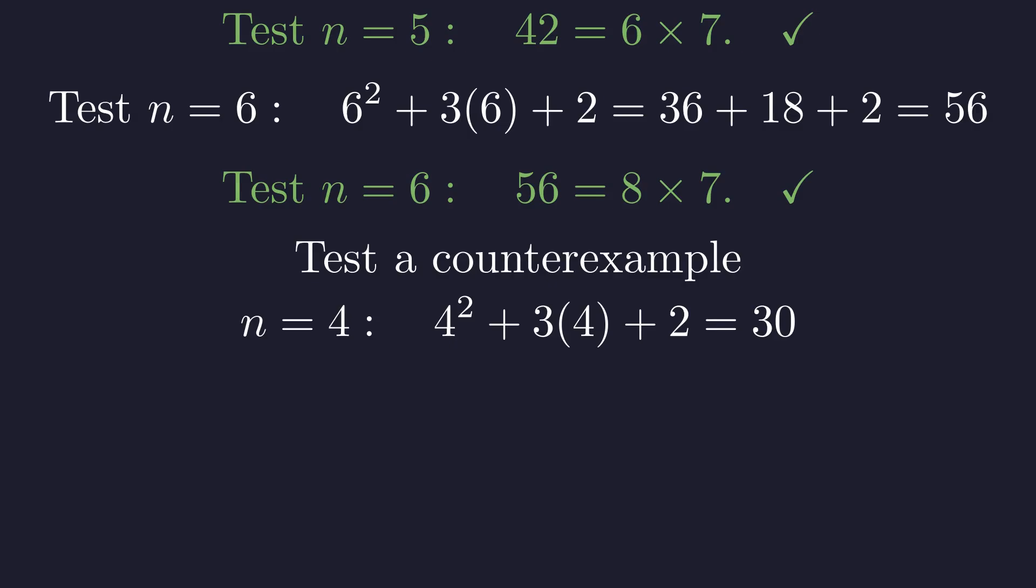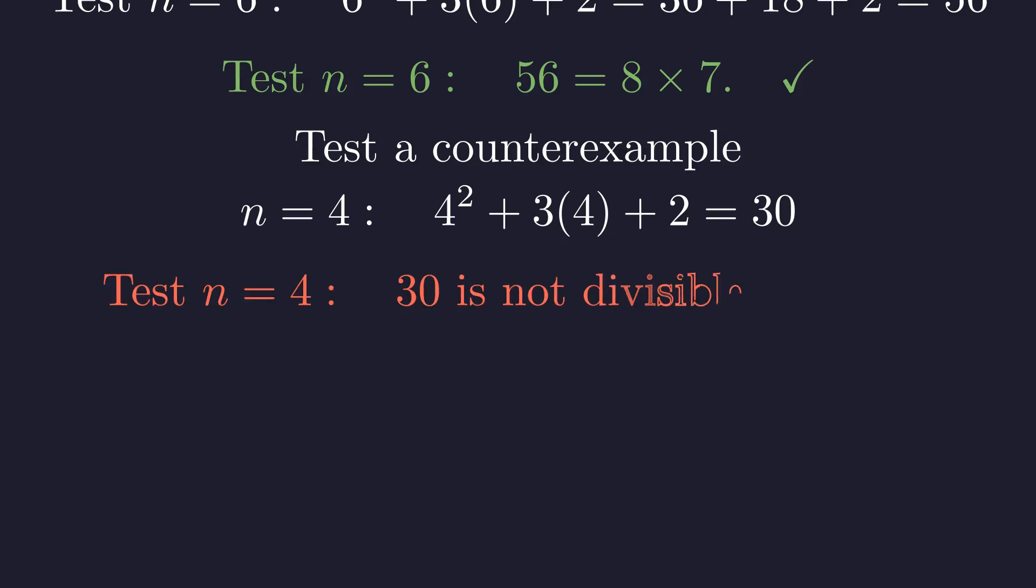What about a number that should fail, like n equals 4? The expression is 30. 30 is not a multiple of 7, confirming our prediction. The logic is sound.